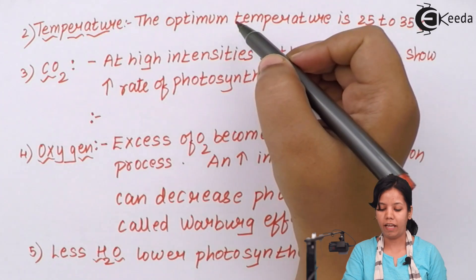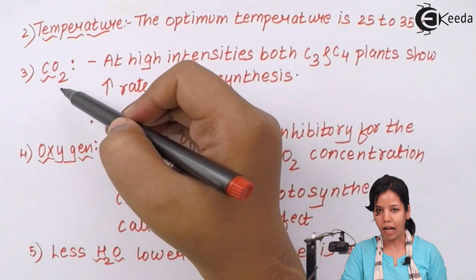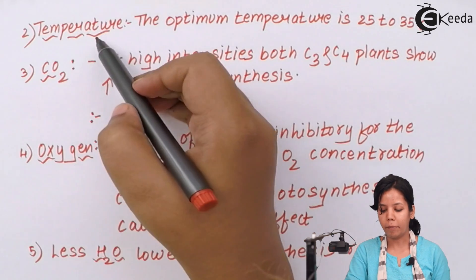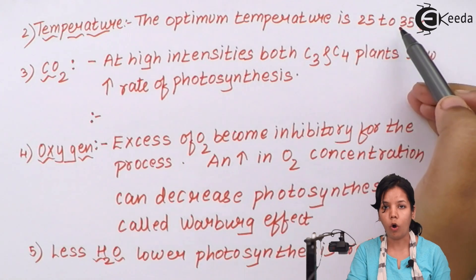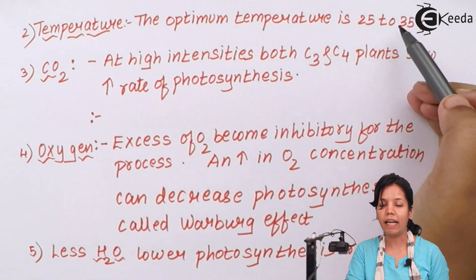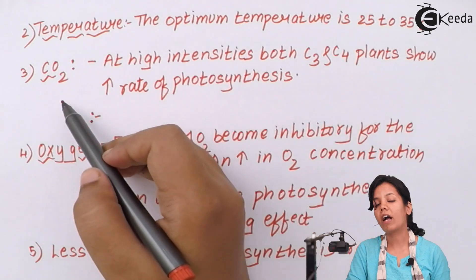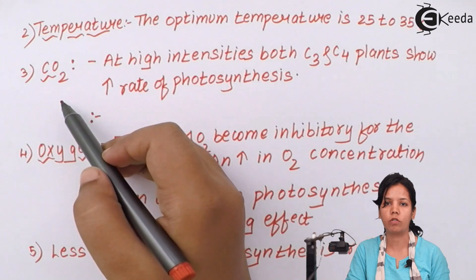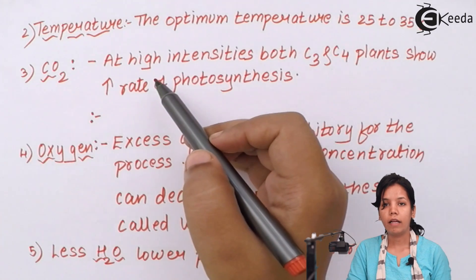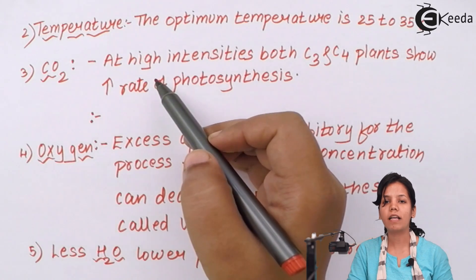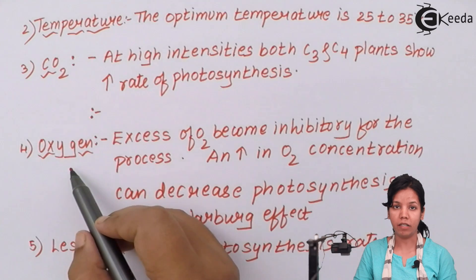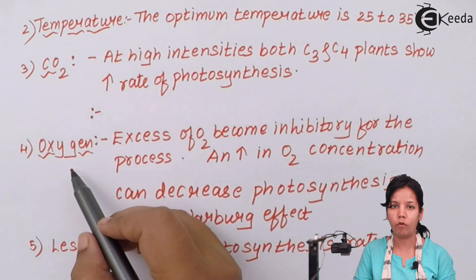The other factors that affect the process of photosynthesis are temperature, carbon dioxide, oxygen, and water. Temperature: the optimal temperature required for photosynthesis is approximately 25 to 35 degrees Celsius; temperature beyond that can cause transpiration or loss of water. Carbon dioxide: high intensities of carbon dioxide help C3 plants and C4 plants carry out photosynthesis better. C4 plants are CAM plants or desertic plants, and C3 plants are plants which tolerate temperate environments. The amount of oxygen can be inhibitory for photosynthesis; increased oxygen can hamper the process.